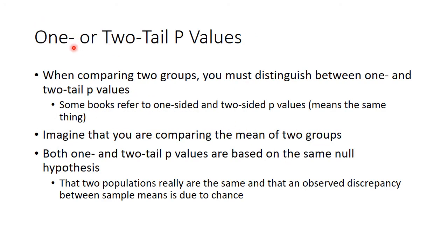The other thing to look at is whether you're evaluating a one-tail or two-tail p-value. When looking at two groups, you have to distinguish between whether you're going to use a one-tail or two-tail p-value — also referred to as one-sided or two-sided p-values, which are synonymous. Imagine comparing the mean of two groups: one patient group got the antihypertensive, the other got placebo. The one-tail or two-tail p-values should be based on the same null hypothesis — that the two populations are really the same, and any discrepancy between sample means is due to chance alone. The null hypothesis is that the drug is going to have no effect on their blood pressure, and that if there is a little difference, it's only due to chance alone.